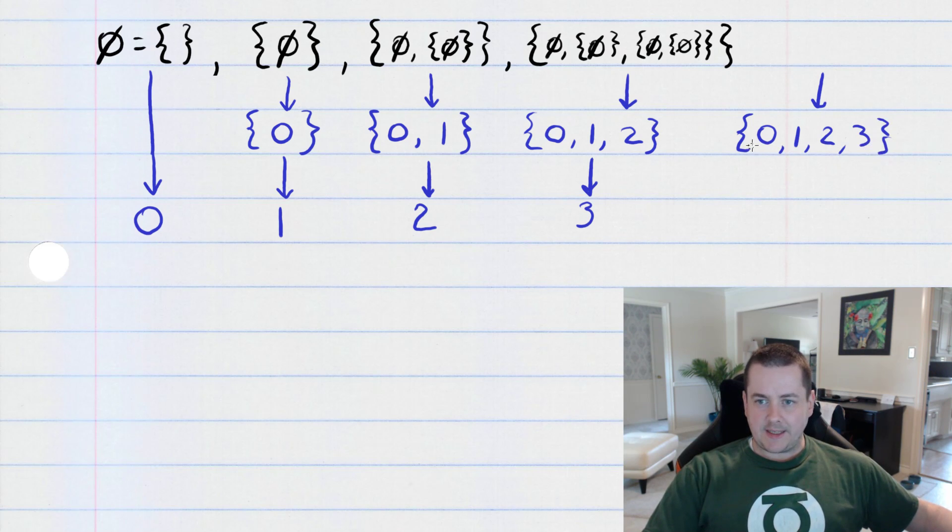So, this set contains all of the numbers we've built so far. And then I say, well, how many numbers are in that set? There are four.